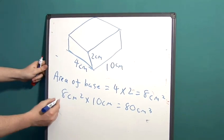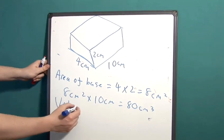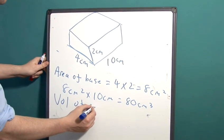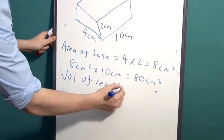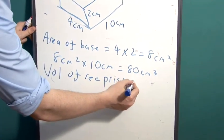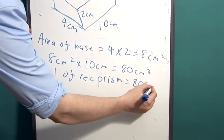So the volume, I'm just going to write vol, of the rectangular prism is 80cm cubed.